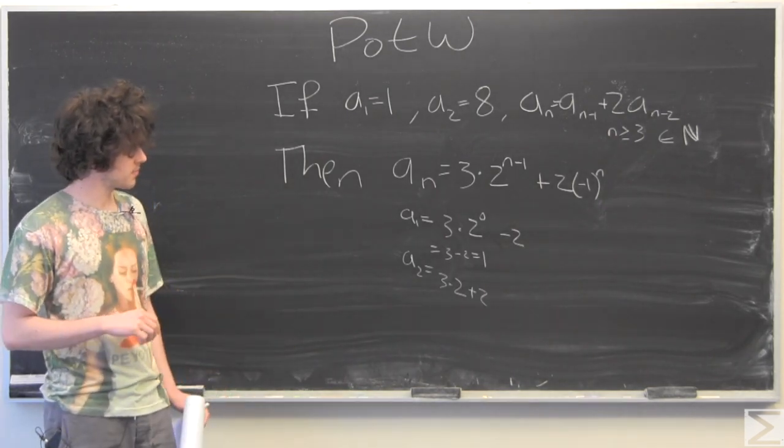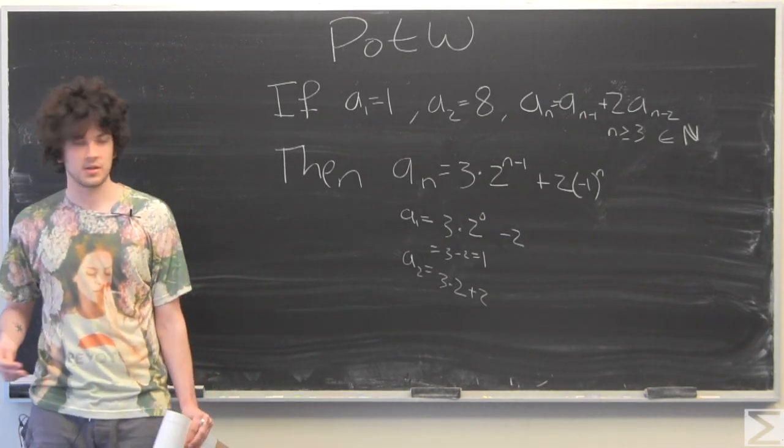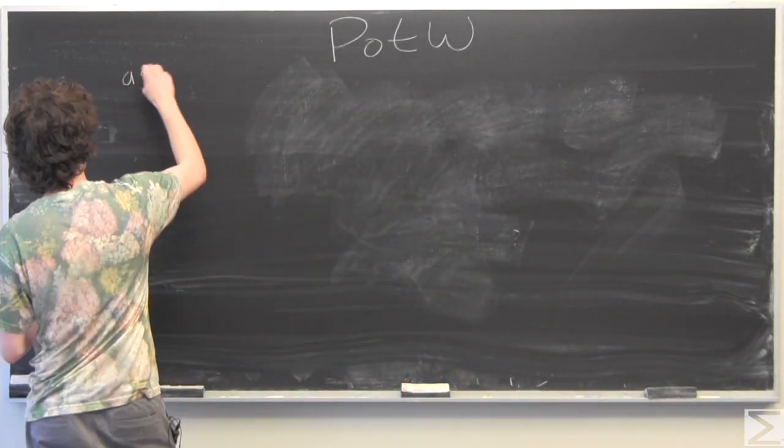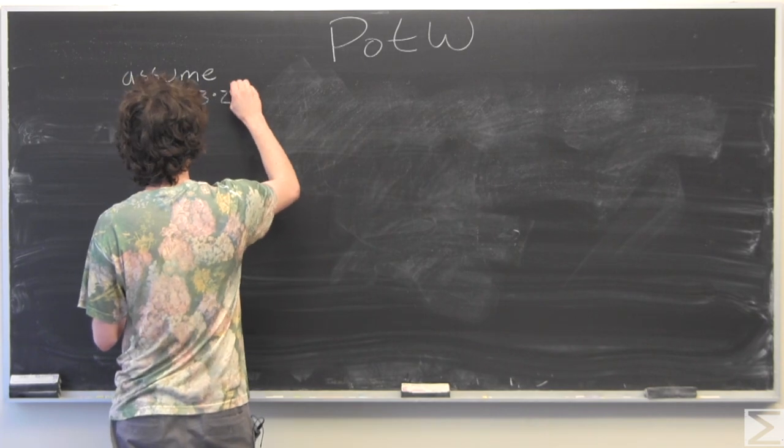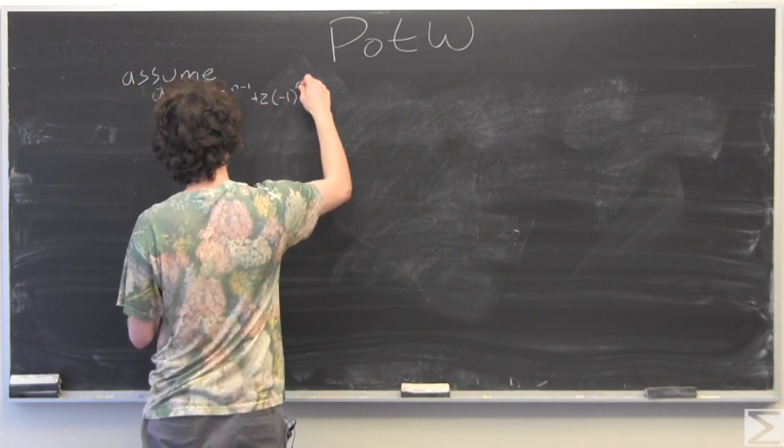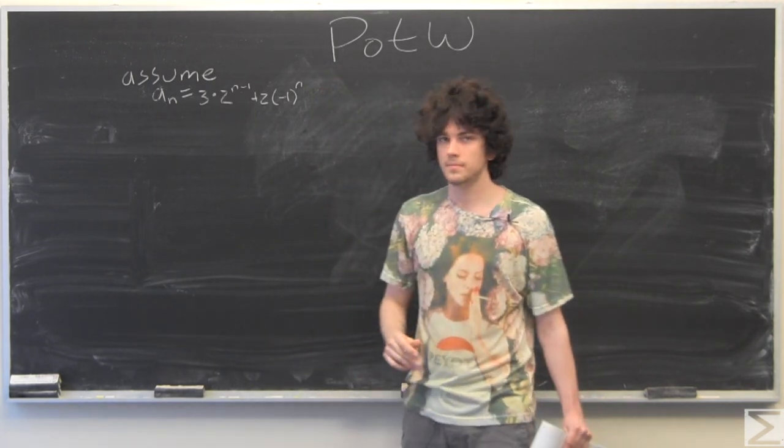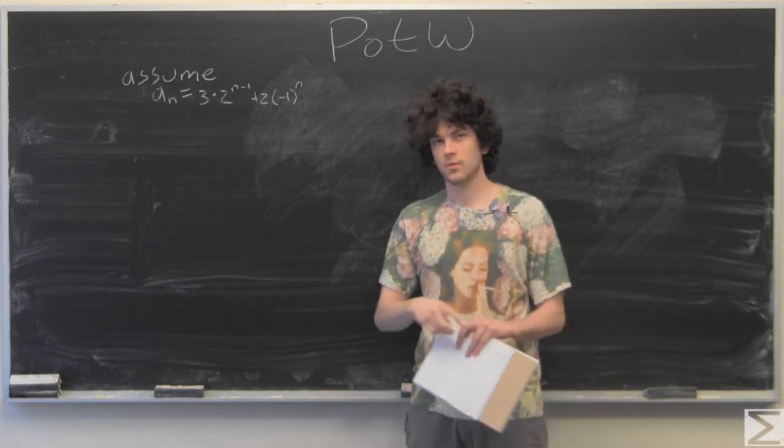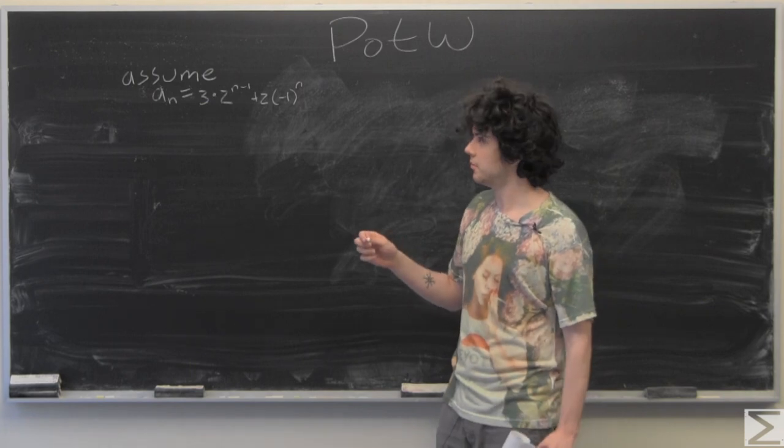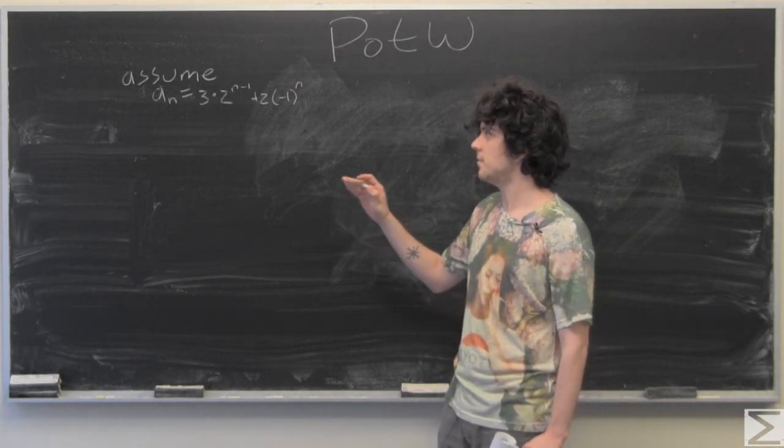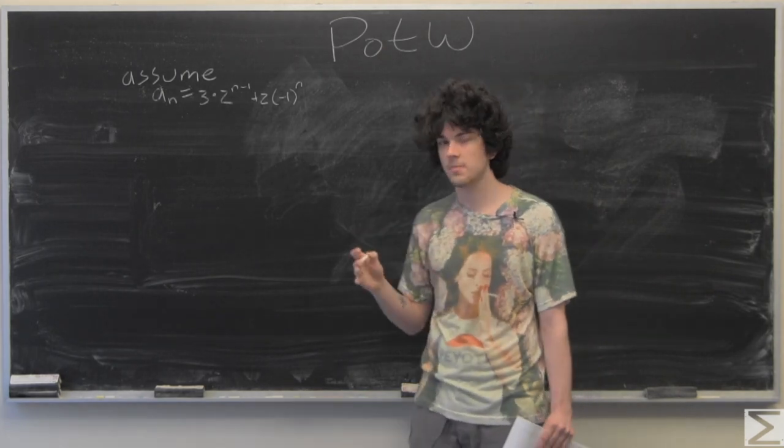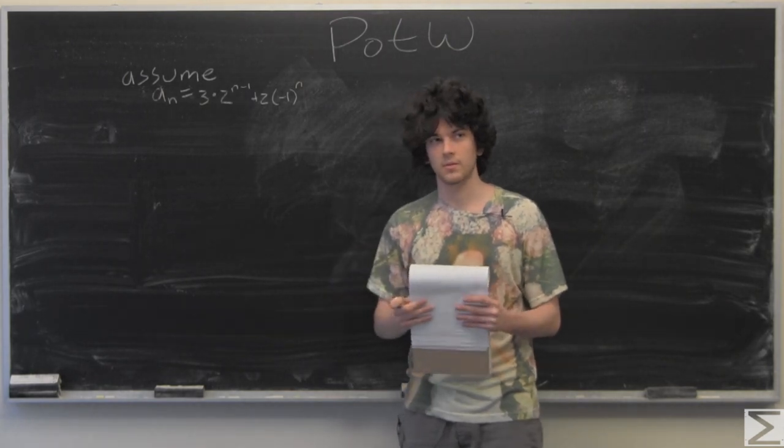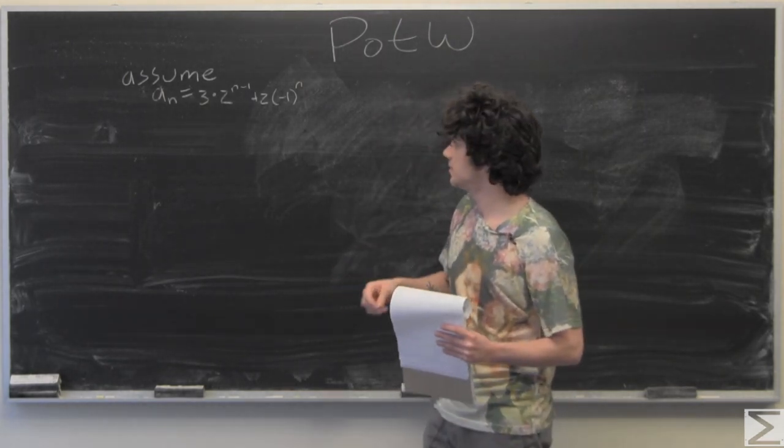So now we're just going to make our assumption and go into our inductive step. So we have this assumption here, which is just what we're trying to prove, and we're going to use that assumption later on to prove that the n plus 1 term is going to fall into our equation for what we would expect.